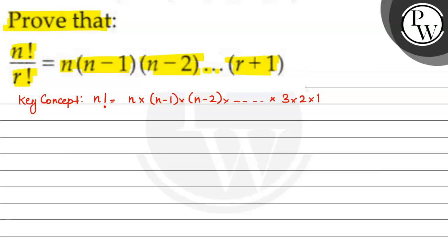Now, this one is more concept used in this question. When R is less than N, this expression is N factorial upon R factorial. 1 multiplied by 2 multiplied by 3 so on up till R multiplied by R plus 1 multiplied by R plus 2 so on up to N minus 1 multiplied by N.